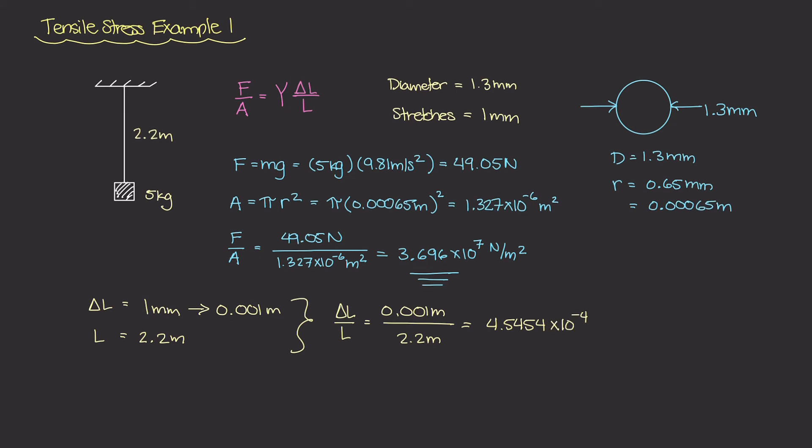And again, this is dimensionless. There are no units here. So we know what our F over A value is, our tensile stress, and we know what our ΔL over L value is, our strain. We can take both of those values and plug them in here and here, and we can solve for Y, which is our Young's modulus.